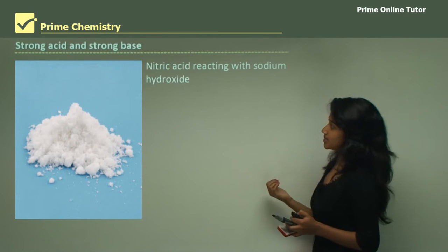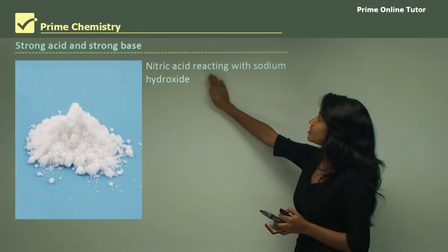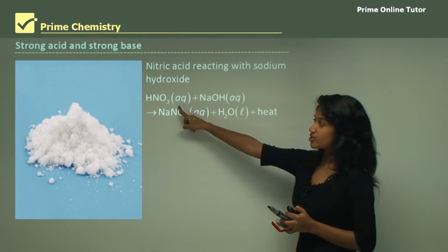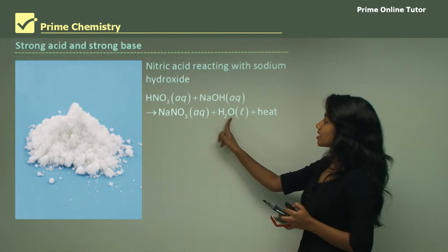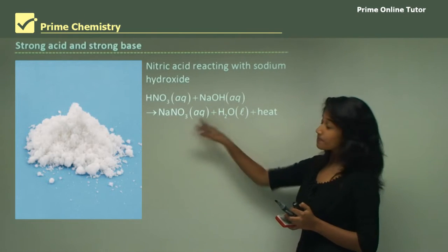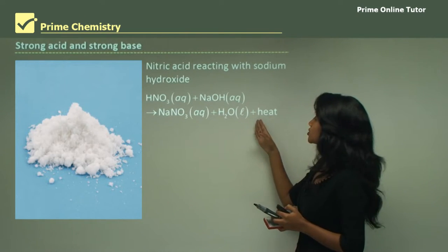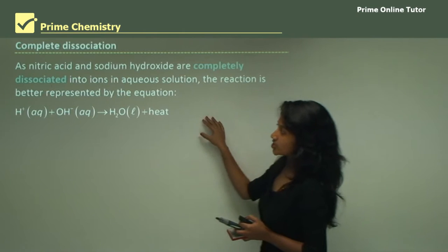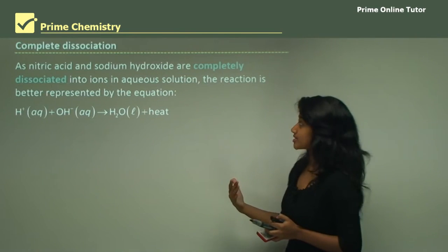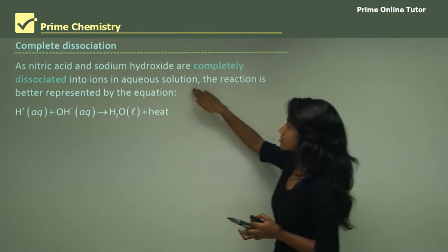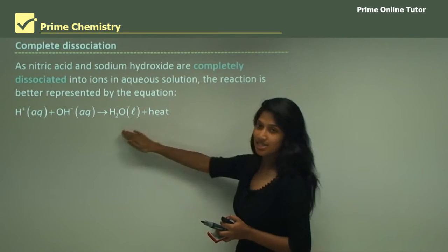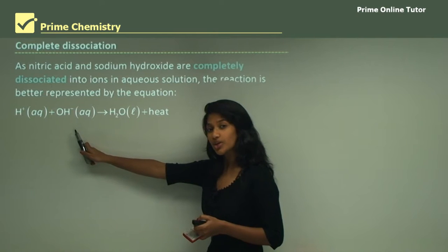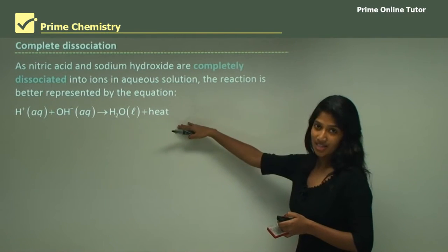Strong acid and strong base: nitric acid (a strong acid) reacting with sodium hydroxide (a strong base) forms water and sodium nitrate as a salt. This is a neutralization reaction, so heat is liberated. Because both nitric acid and sodium hydroxide are completely dissociated into ions in aqueous solution, the reaction is better represented as hydrogen ions plus hydroxide ions giving water and heat.